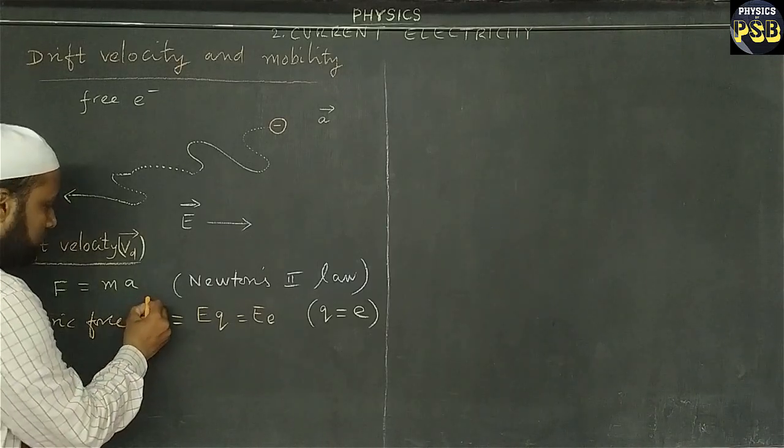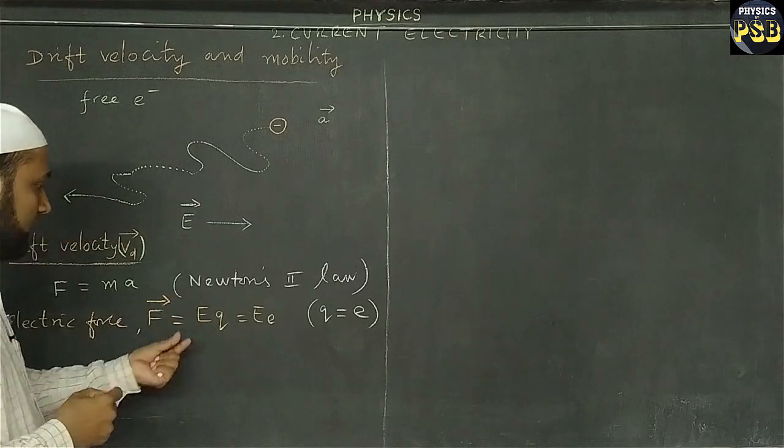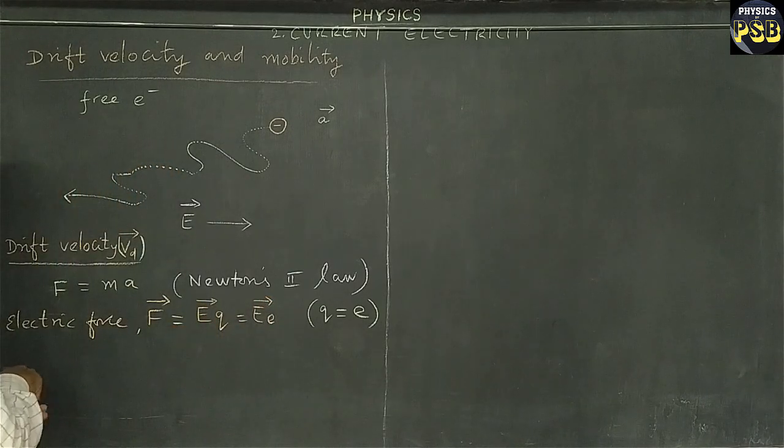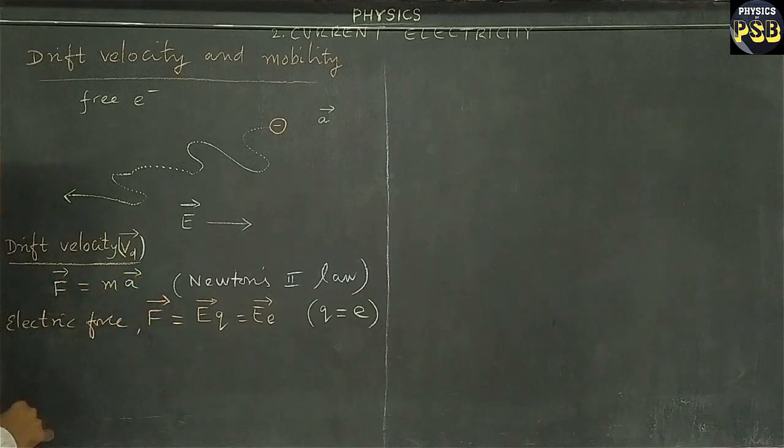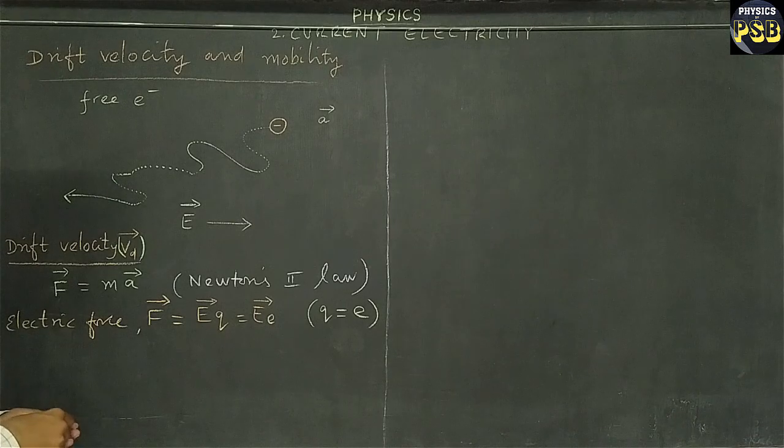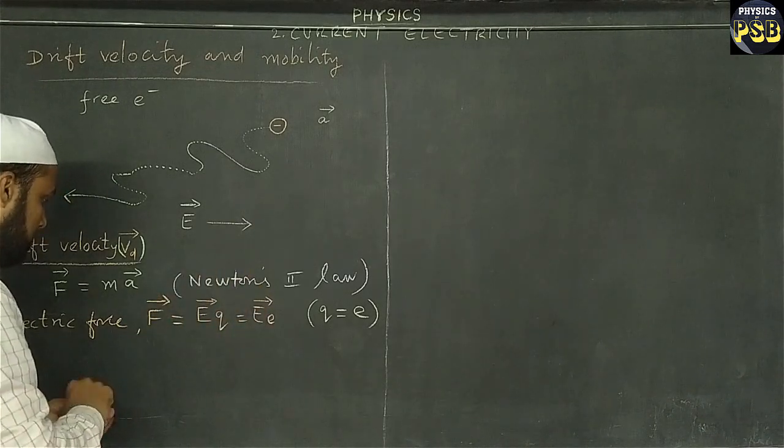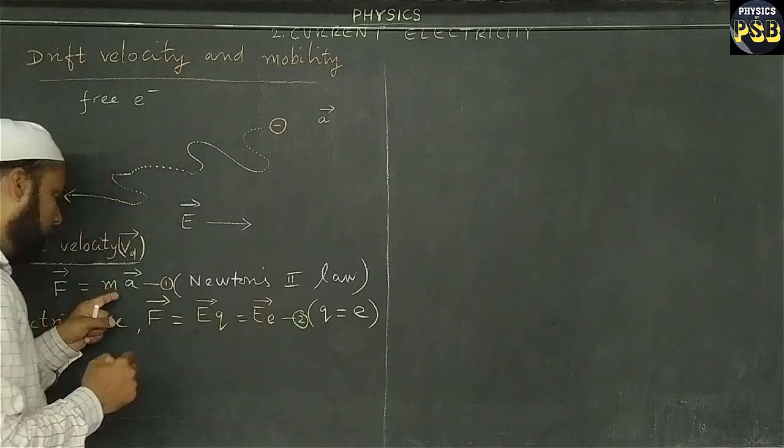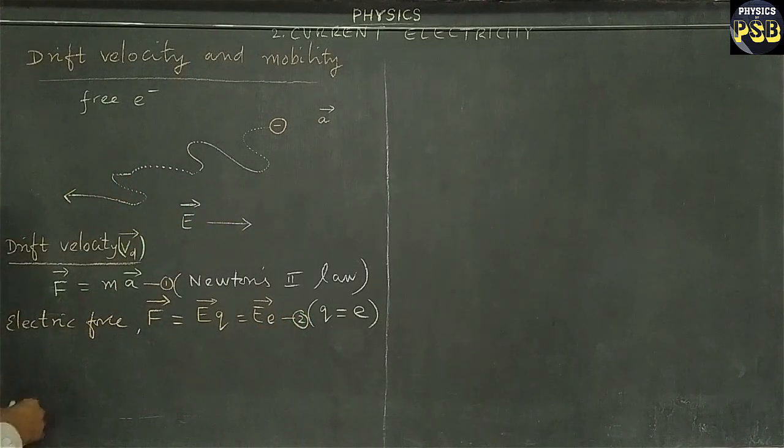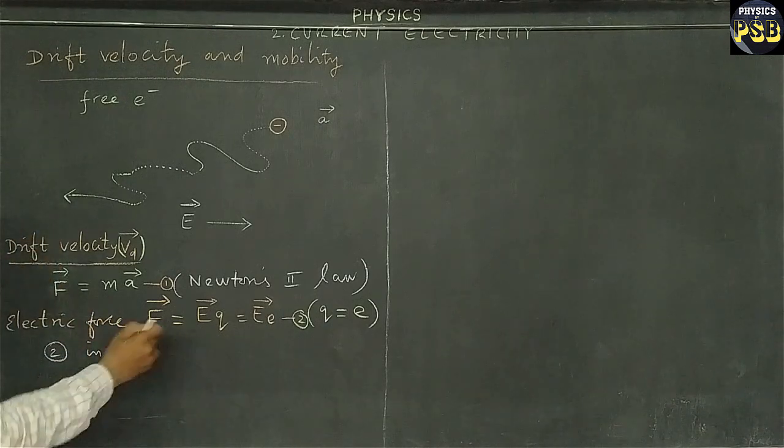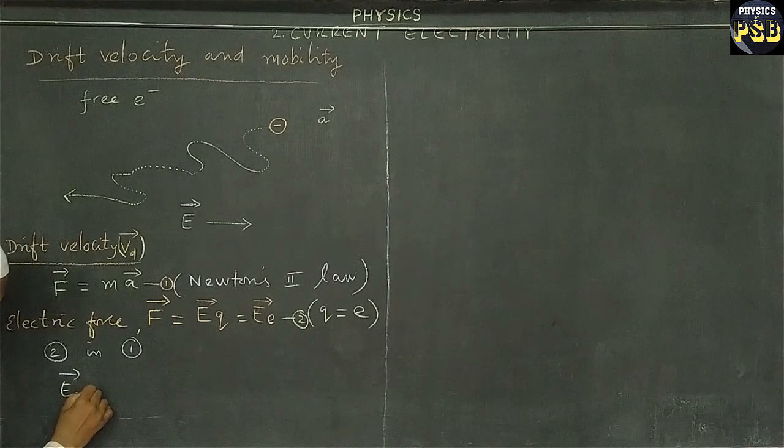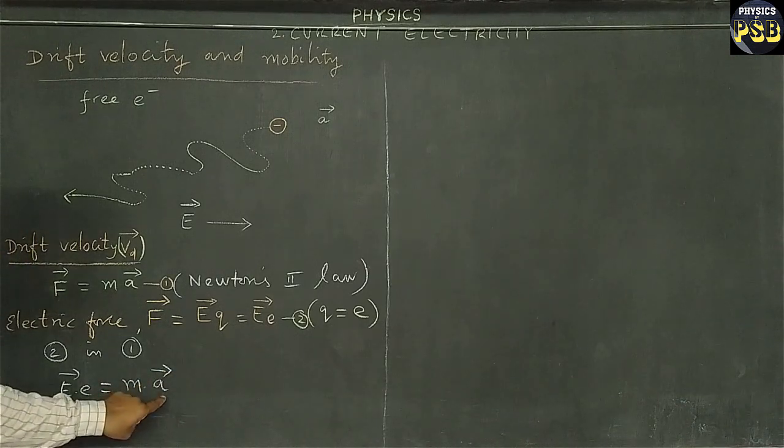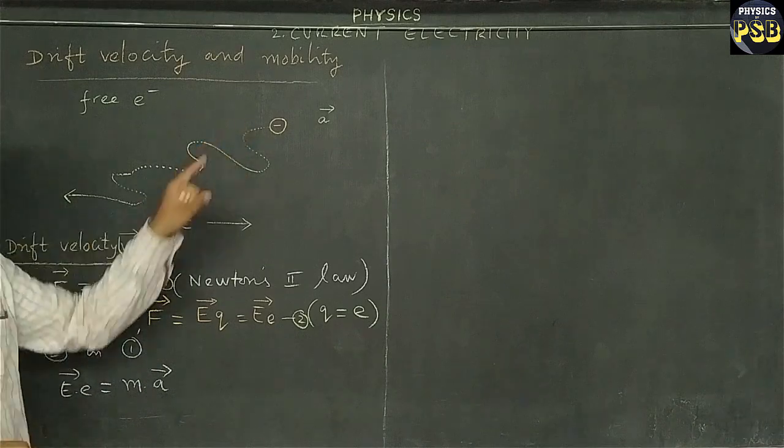I am going to use the arrow to show that it is a vector. Now I am going to use equation number 2 in 1. So I use equation number 2 in 1. So what I will get? I will get this: E vector into small e equals to M A vector. Here A is acceleration and M is the mass of free electrons under motion.